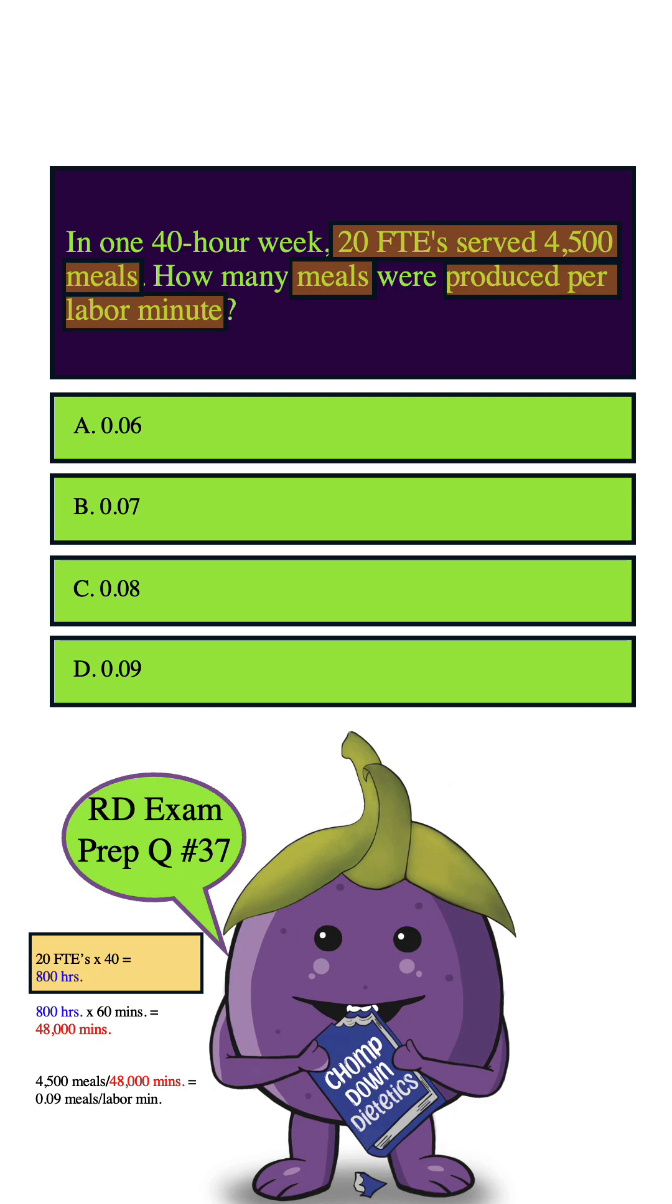So 20 FTEs times 40 equals 800 total hours. We're going to take that 800 total and multiply it by 60 minutes because we need to convert hours to minutes because it's asking for meals produced per labor minute. When we do that, we're going to get 48,000 total minutes.